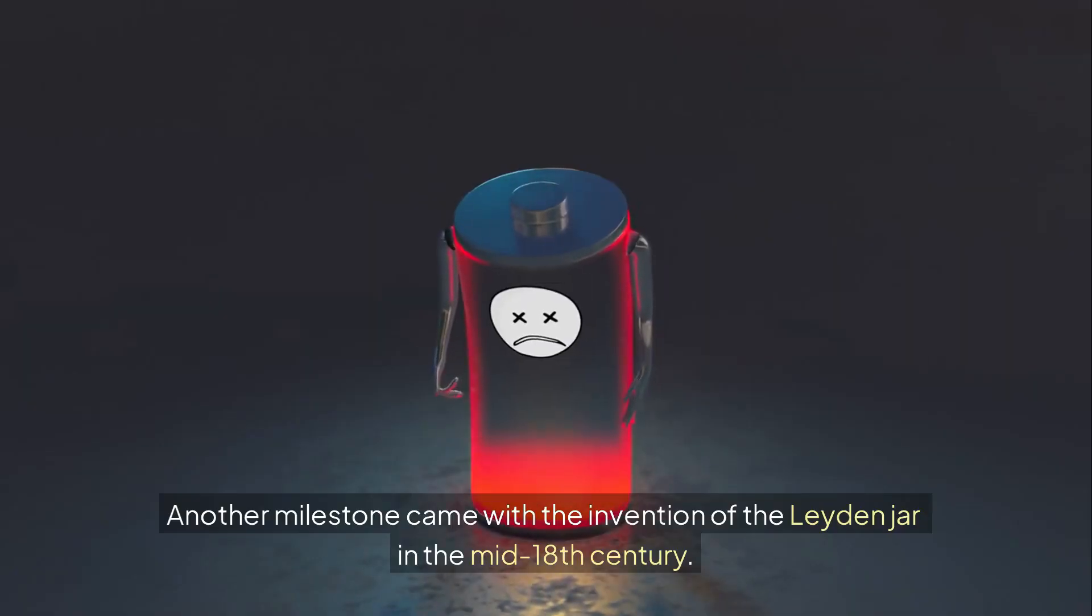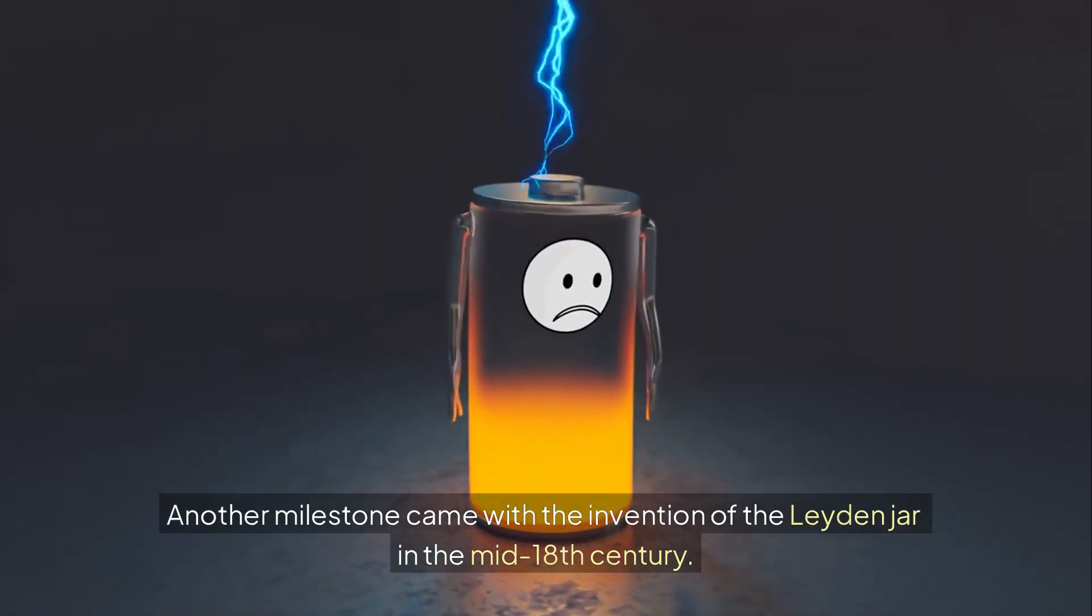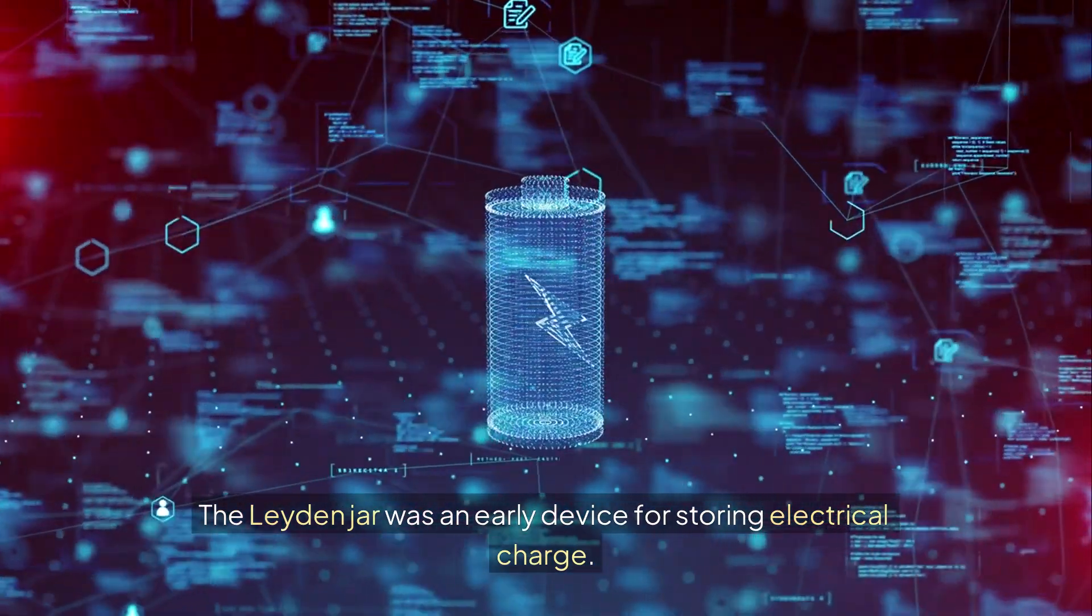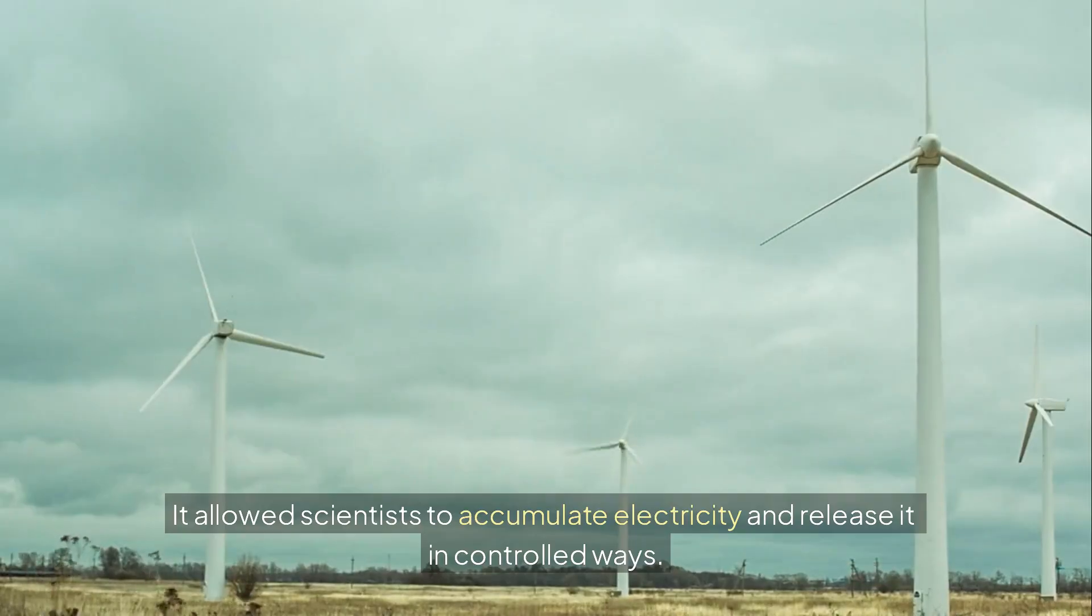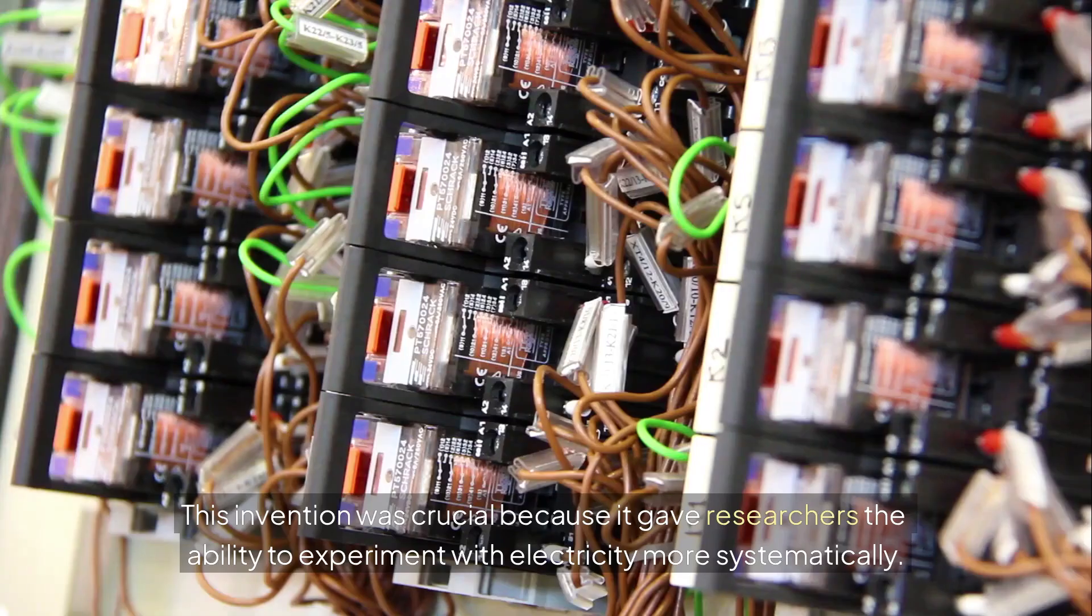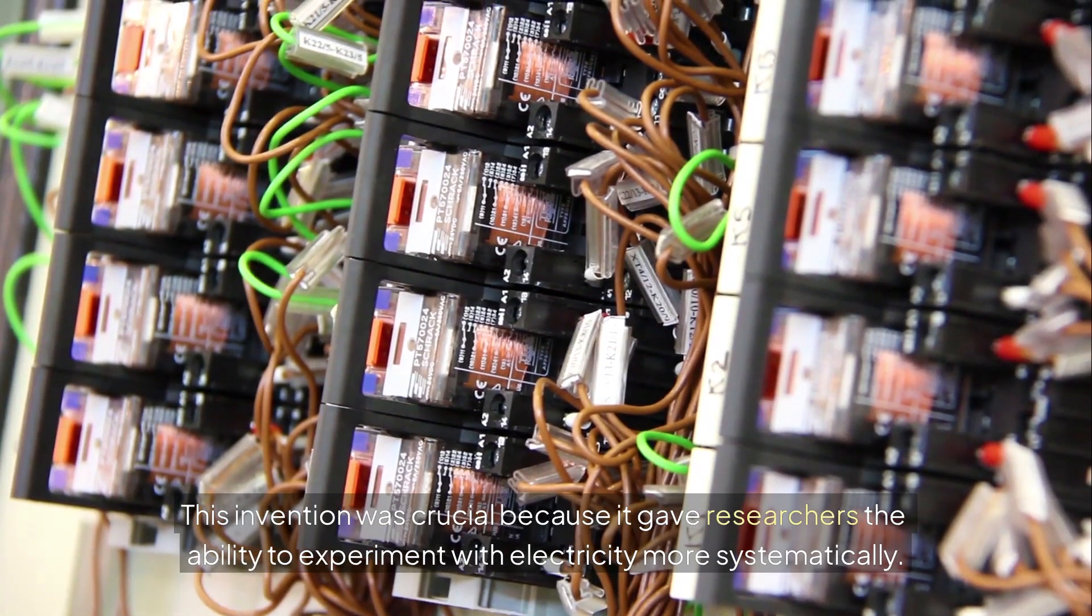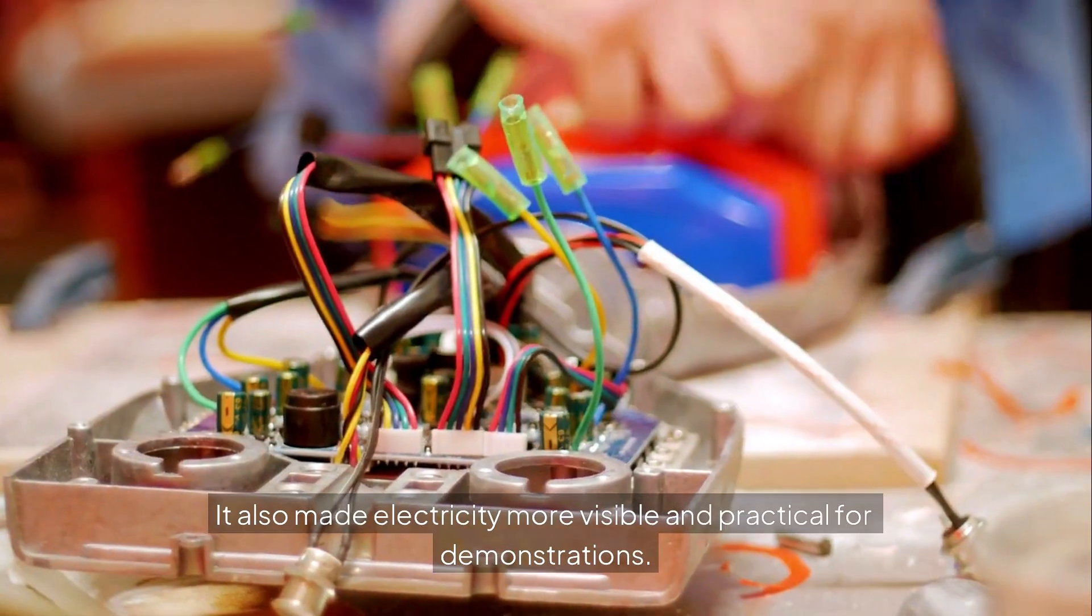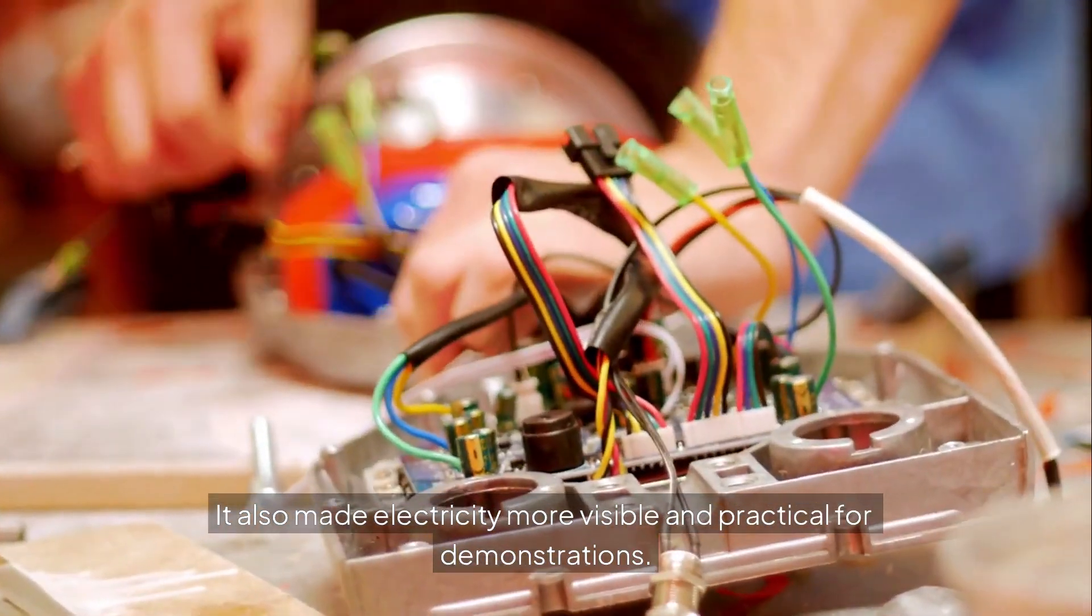Another milestone came with the invention of the Leiden jar in the mid-18th century. The Leiden jar was an early device for storing electrical charge. It allowed scientists to accumulate electricity and release it in controlled ways. This invention was crucial because it gave researchers the ability to experiment with electricity more systematically. It also made electricity more visible and practical for demonstrations.